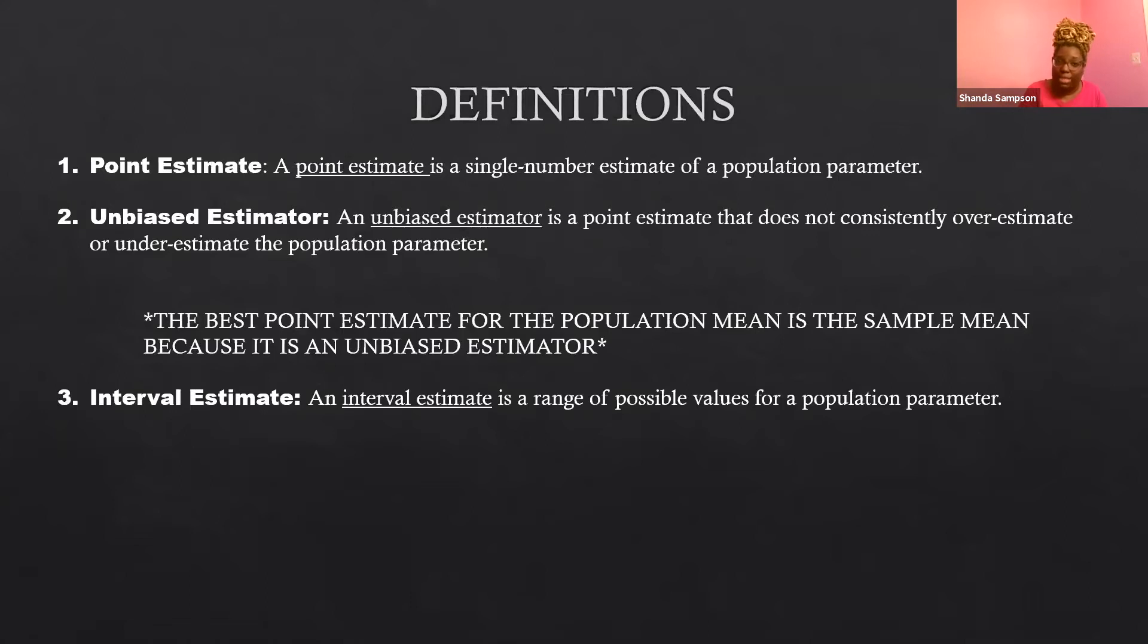You know that if you have one point estimate, it's going to give you more error in theory, right? Then having a range of numbers, the probability that you're within the range is definitely higher than the probability that you've got one single estimate of that number.